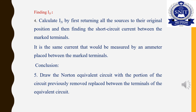The Norton current is the same current that would be measured by an ammeter placed between the marked terminals. Finally, we draw Norton's equivalent circuit consisting of an equivalent current source in parallel with the resistance or impedance.